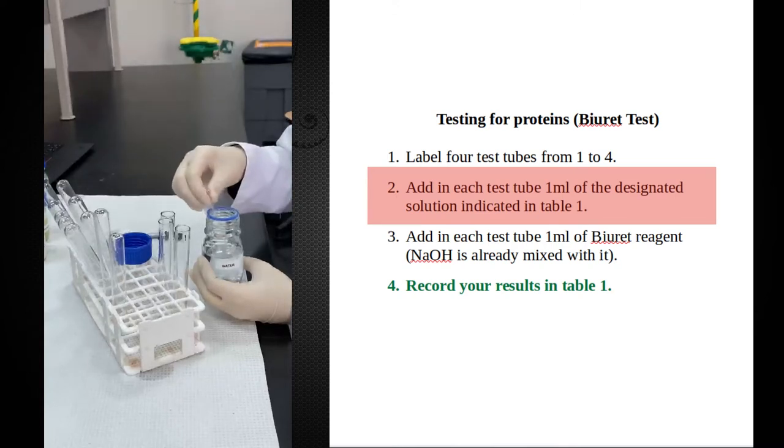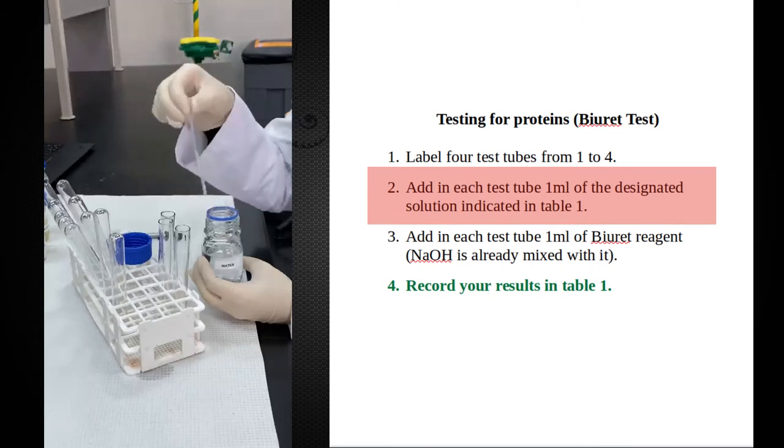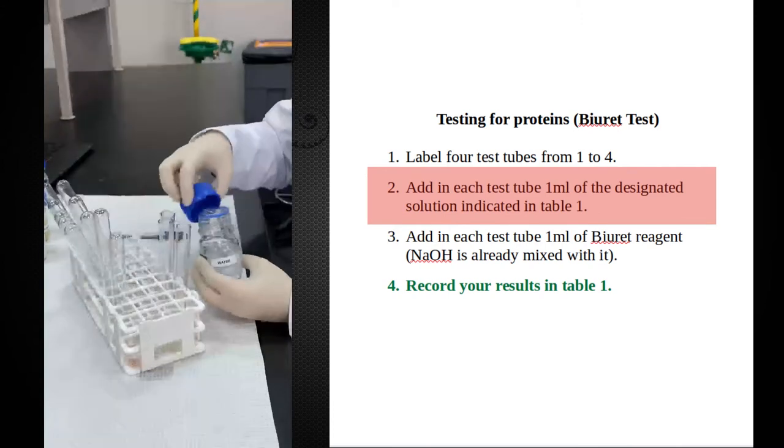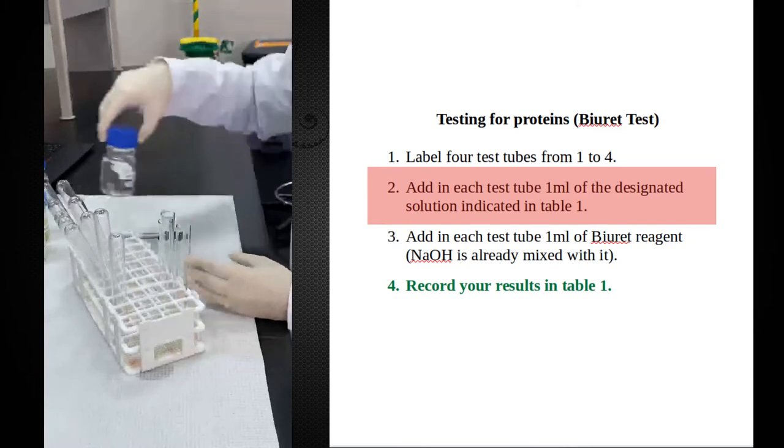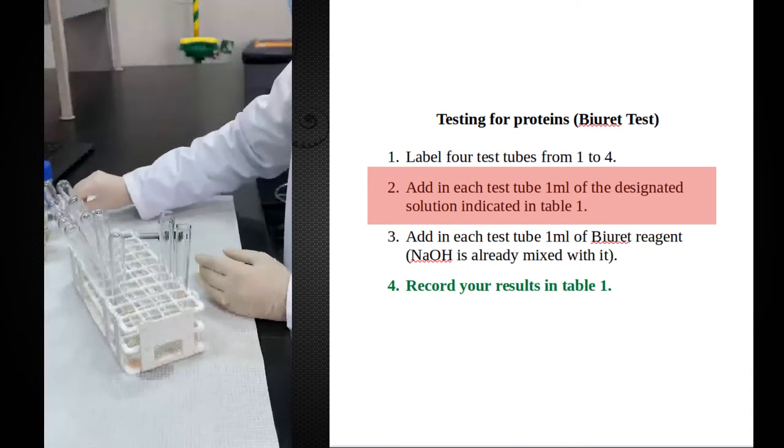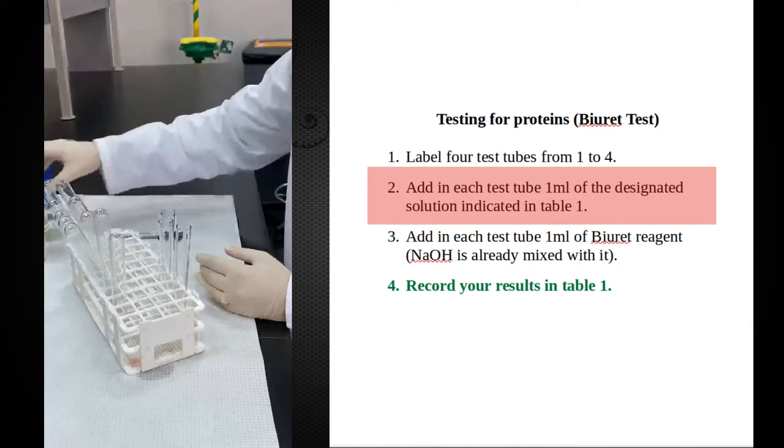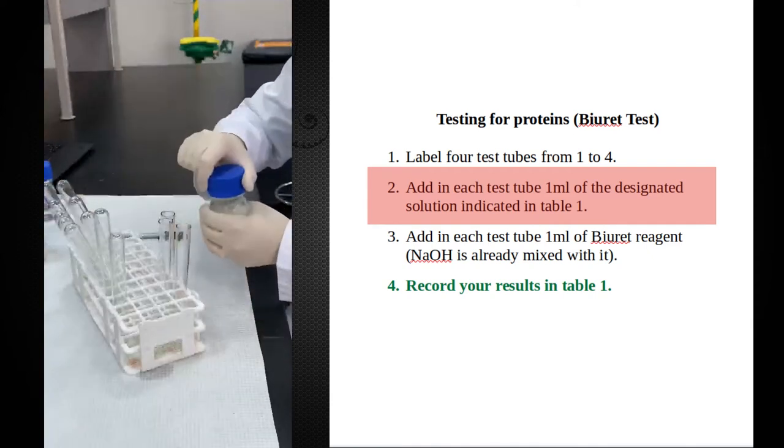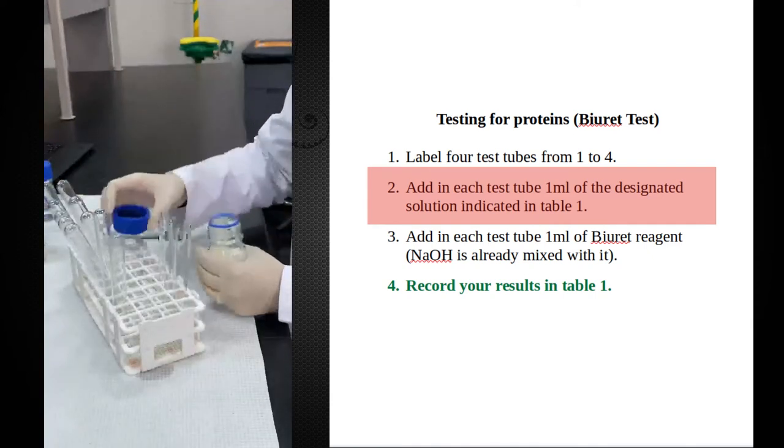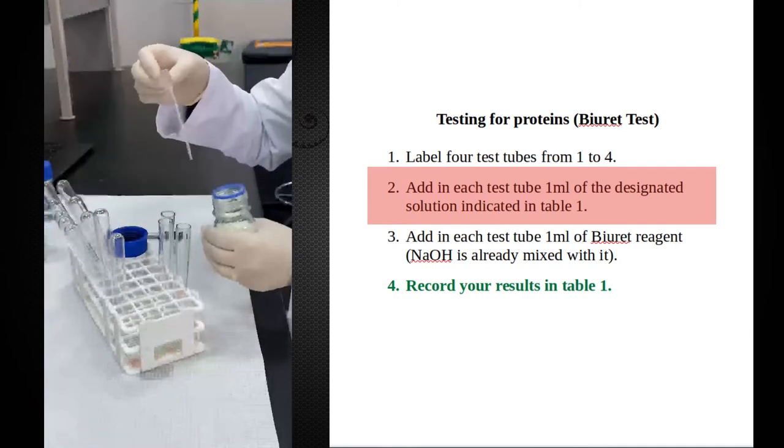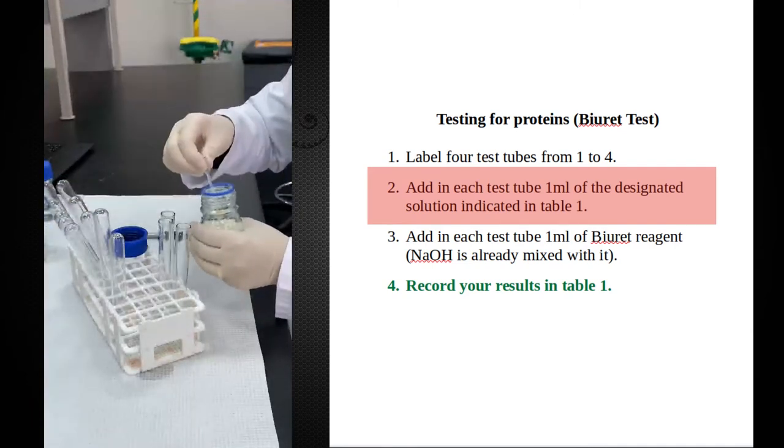My second test tube has to be a positive control, something that I know contains a protein. For this purpose, I am using egg albumin. So with another dropper, 1 ml of egg albumin.